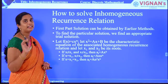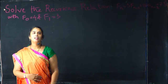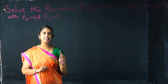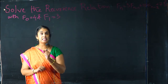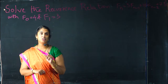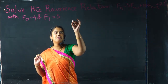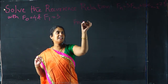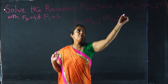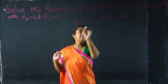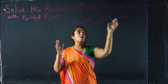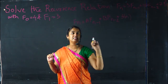Now we will see a problem to clearly understand this. A recurrence relation which consists of a homogeneous solution and a particular solution is called an inhomogeneous recurrence relation. In general, an inhomogeneous recurrence relation is of the form F(n) = A·F(n-1) + B·F(n-2) + F(N). If F(N) is not there, it is homogeneous; since F(N) is present, we need to find its solution separately.